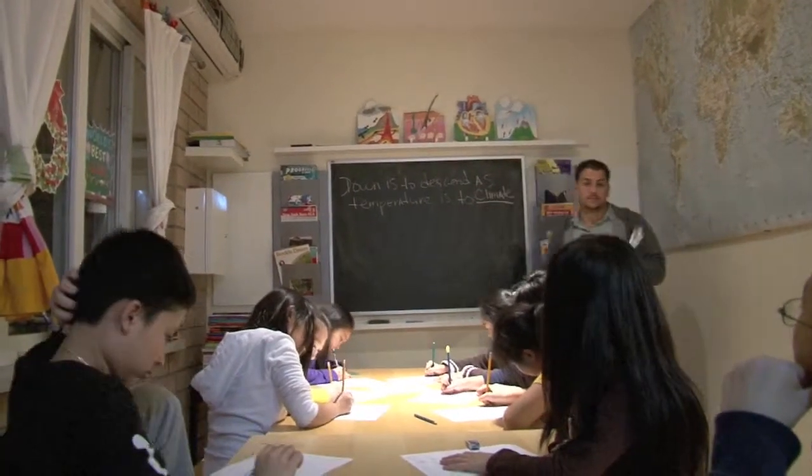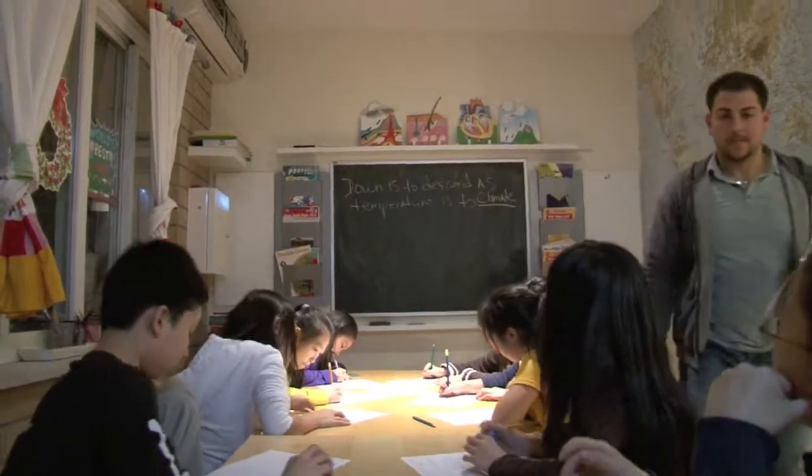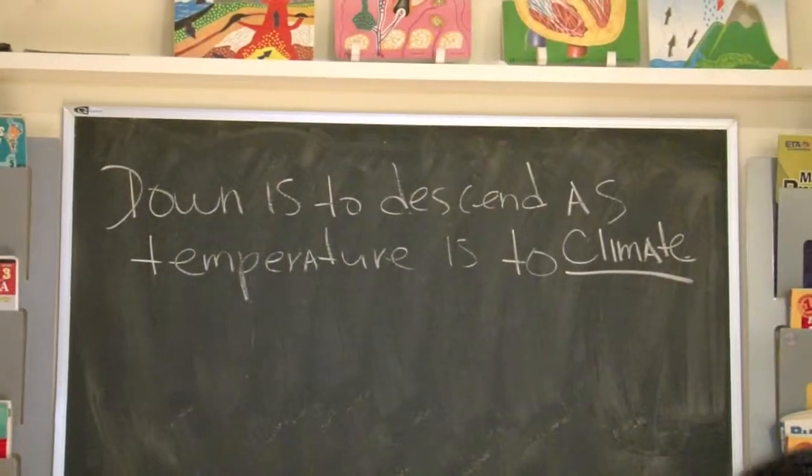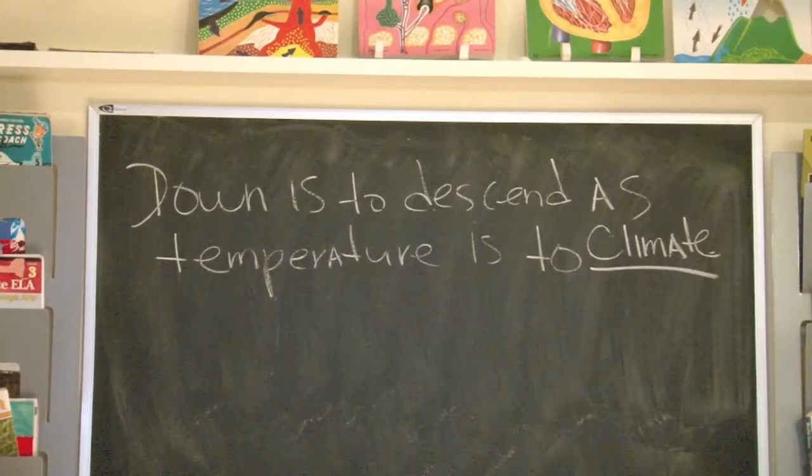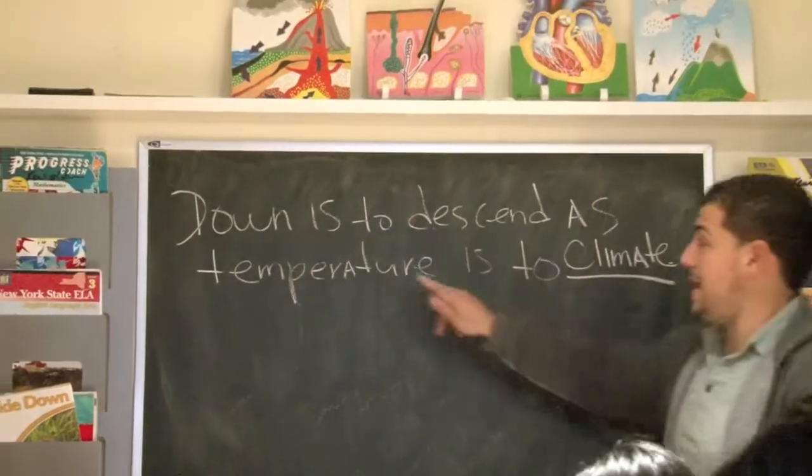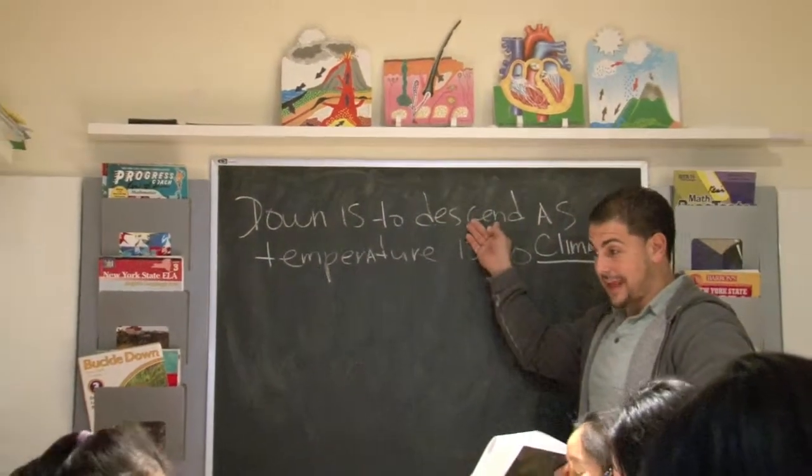Now why is that the right answer? Because down, you go down, you descend that. And then temperature is to climate. Exactly. So temperature relates to climate, right? Down relates to descent.